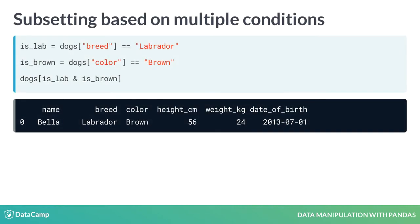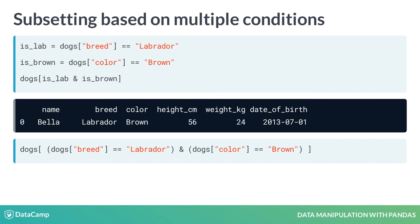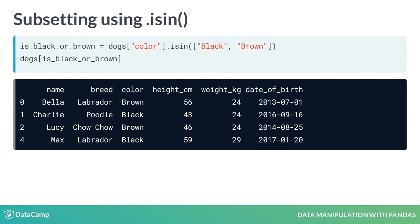To subset rows that meet multiple conditions, you can combine conditions using logical operators, such as the AND operator. This means that only rows that meet both conditions will be subsetted. You could also do this in one line of code, but you'll need to add parentheses around each condition. If you want to filter on multiple values of a categorical variable, the easiest way is to use the isin method. This takes in a list of values to filter for. Here, we check if the colour of a dog is black or brown, and use this condition to subset the data.